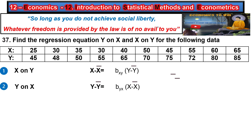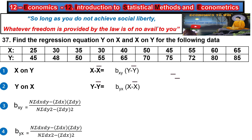For x on y, x̄ equals ȳ. For y on x, b(yx) equals n into sigma dx·dy minus sigma dx into sigma dy, divided by n into sigma dx squared minus sigma dx whole squared.